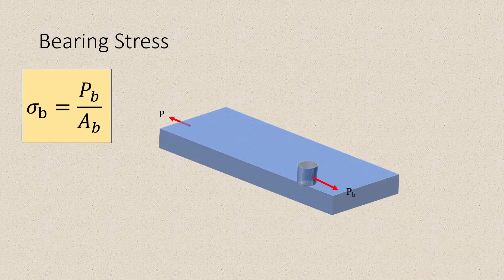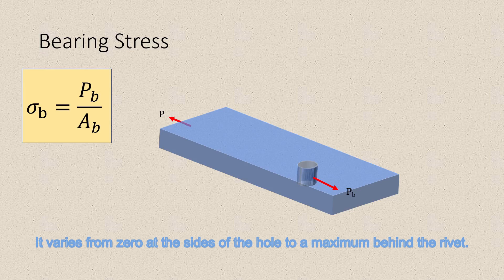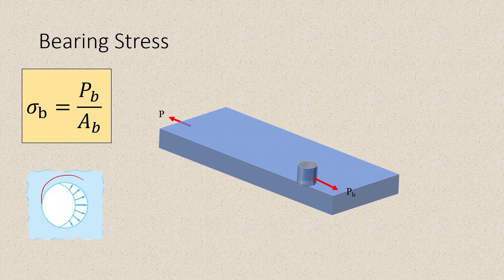This is our free body diagram. We have our applied force, and then to maintain equilibrium, there will be a resisting force which is our bearing force. From this FBD, we see that the bearing force P_B is just equal to the applied load. The bearing stress caused by the rivet is not constant — it varies from zero at the sides of the hole to a maximum behind the rivet.